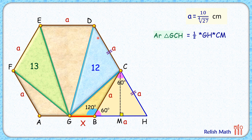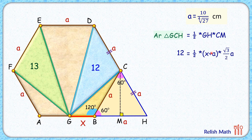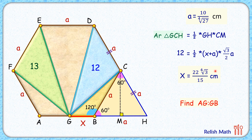Since GC is a median for triangle DGH, and a median divides a triangle into two equal areas, the area of triangle GCH equals half of triangle DGH, which is 12 cm². Putting in the values: GH = x + a and CM = √3/2·a. Substituting a = 10 / ⁴√27 and solving the equation gives the value of x = 22·⁴√3 / 15 centimeters, and that's our answer.